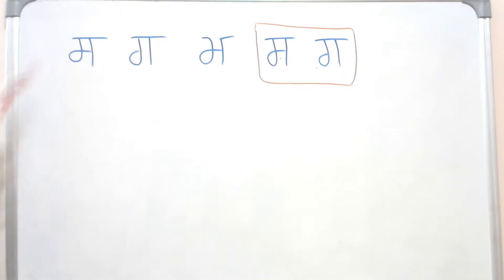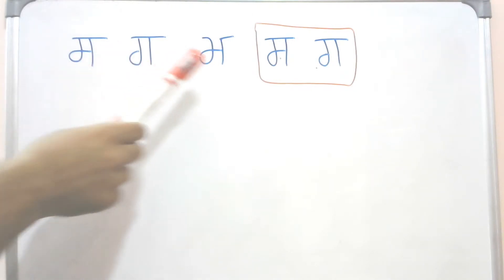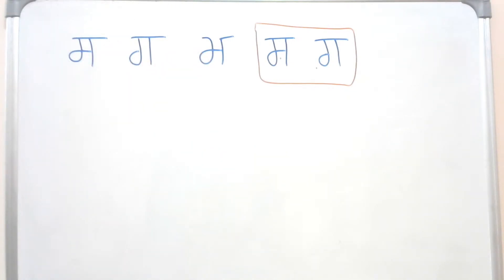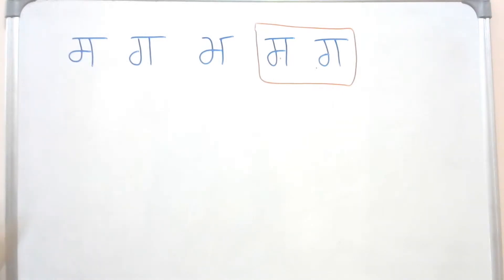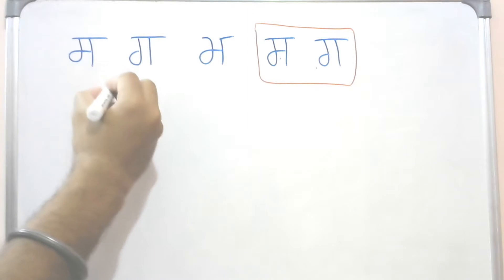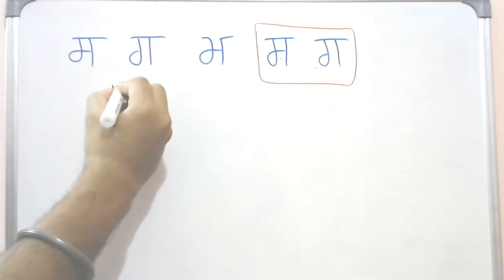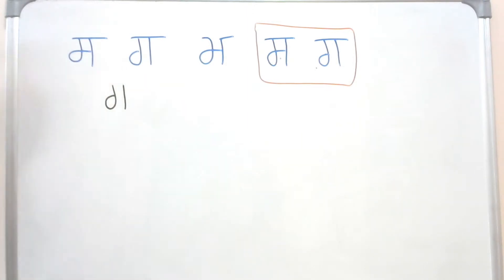If I look at Sassa, Gagga, and Mamma, their base is almost the same. If I have to find the common element among these three letters, I will have something like this — this structure is the same in all the letters.